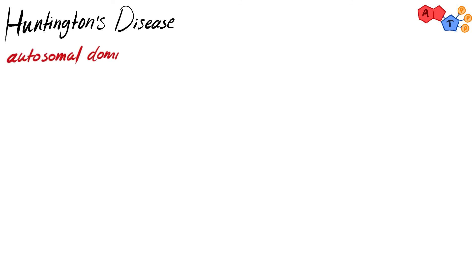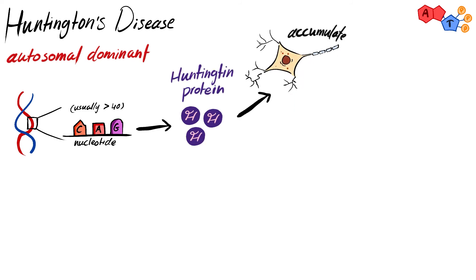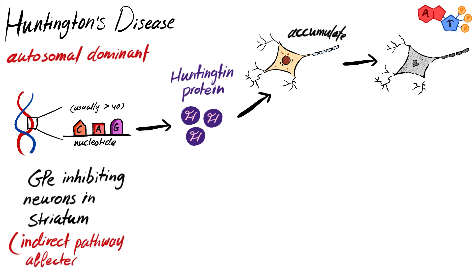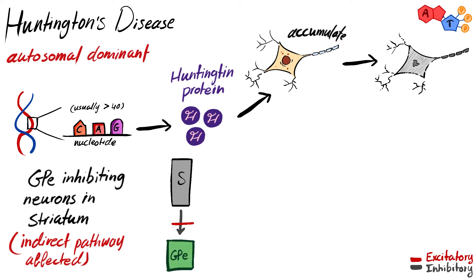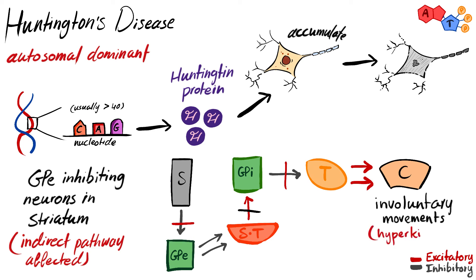Huntington's disease is an autosomal dominant condition where a mutant huntingtin protein accumulates inside neurons, causing their degeneration. The striatal neurons responsible for inhibiting globus pallidus externa degenerate, affecting the indirect pathway. Decreased inhibition of GPe allows it to freely inhibit the subthalamic nucleus, resulting in less excitation of globus pallidus interna, less inhibition of the thalamus, and involuntary movements at rest.